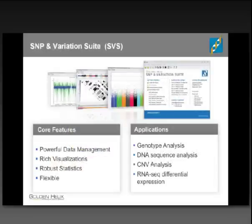Today, mostly we're going to talk about the SNP and Variation Suite, or SVS. SVS has been our flagship product for several years. It's a very powerful platform for working with many different types of genetic data, particularly SNP data or genotype analysis for GWAS. During the presentation today, we'll spend quite a bit of time interactively looking at some of the features in SVS — especially the visualizations and the flexibility of the software for working with different data types and addressing different hypotheses.